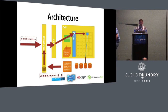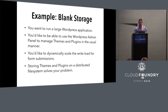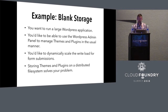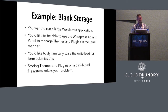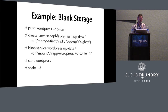Let's look at a couple of specific examples. First, blank storage — the most obvious example. Say it's a large WordPress application with a very high-traffic blog. You'd like to use WordPress on Cloud Foundry the way it was intended to be used — having a site administrator install themes and plugins directly through the admin panel. You'd also like to dynamically scale the write load; you have a lively comments section or forum with a write load that can spike, so you'd like to be able to scale horizontally. Cloud Foundry allows you to do that, provided you have a distributed file system in your service marketplace.